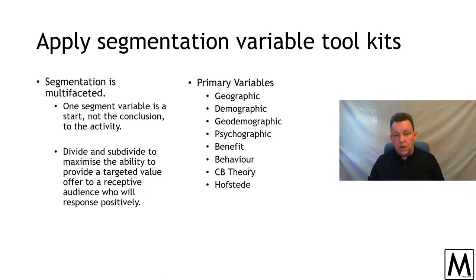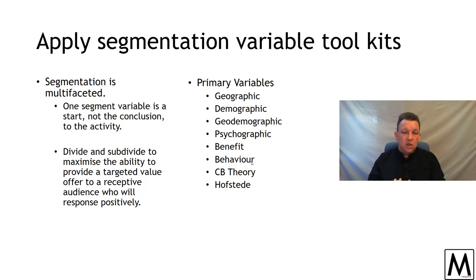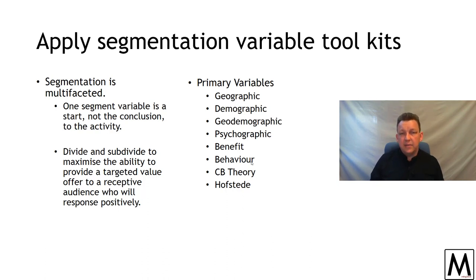Also from international business, the Hofstede variables — things like power dynamics — can be used for segmentation. The key is to work with the variables that are going to give you the best return in terms of what your value offer most likely needs. Benefit and behavior are super useful; psychographics are hard to get but brilliant when you've got it; and some of the Hofstede stuff can be clichéd and suspect, but may also be useful.